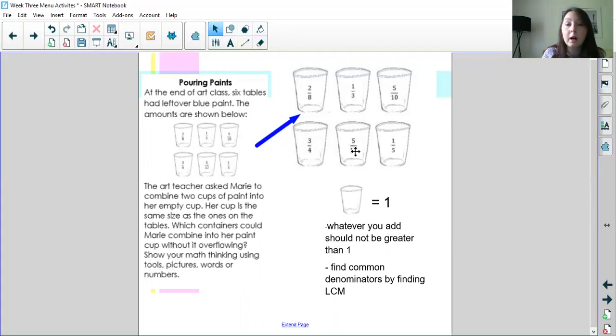So if your denominator was 12 and you're adding something to it, the answer should not be greater than 12 twelfths because that would be one whole. Because remember, in the word problem it says which containers could Marie combine into her paint cup without it overflowing? So your answer cannot be greater than one whole.